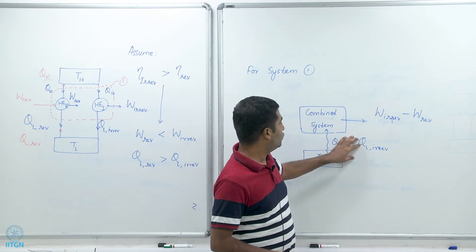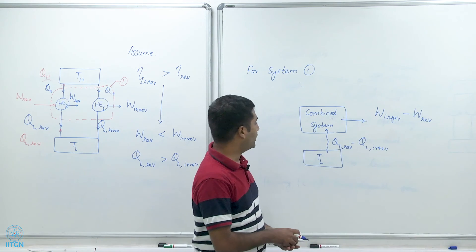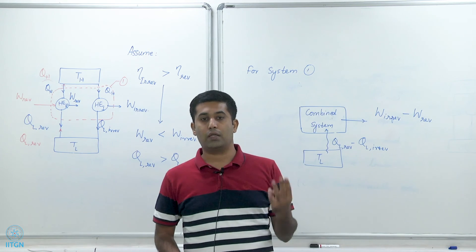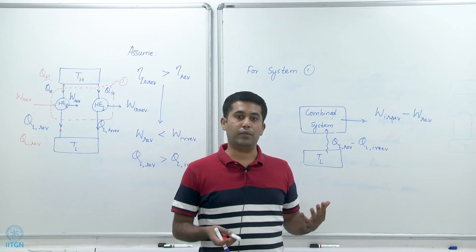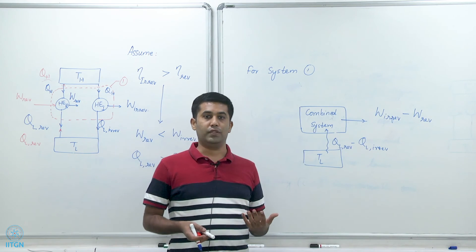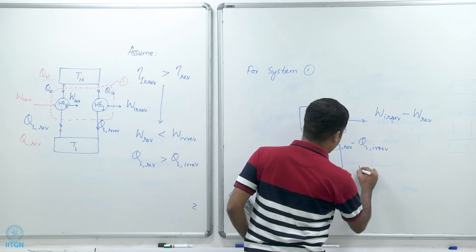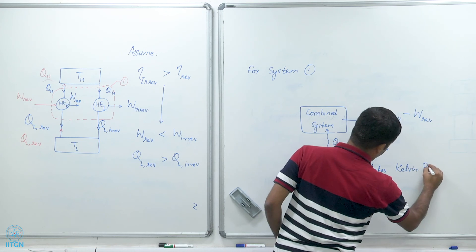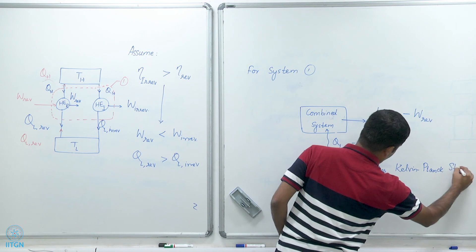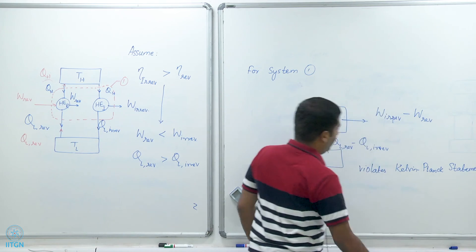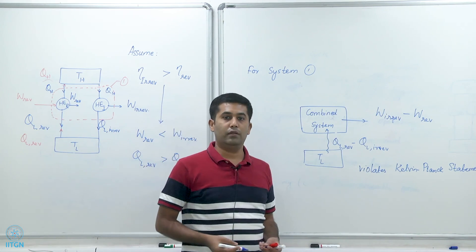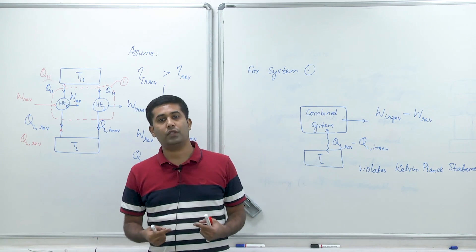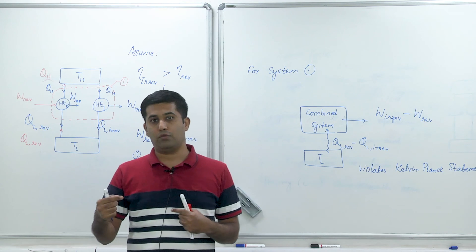By the first law, this combined system operates in a cycle, interacts with only one thermal energy reservoir, and outputs work continuously. This is obviously impossible because it violates the Kelvin-Planck statement of the second law of thermodynamics. Therefore, we cannot have irreversible heat engines operating between the same two temperature reservoirs that are more efficient than reversible heat engines between those same two reservoirs.